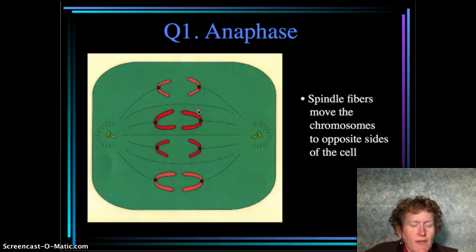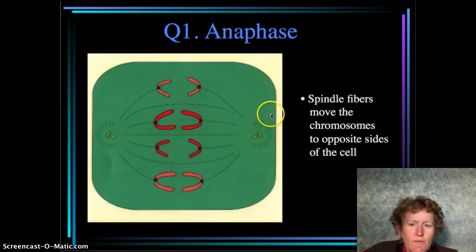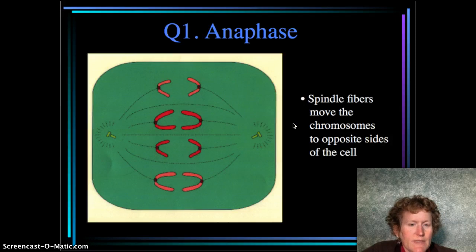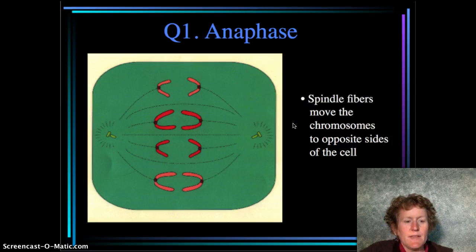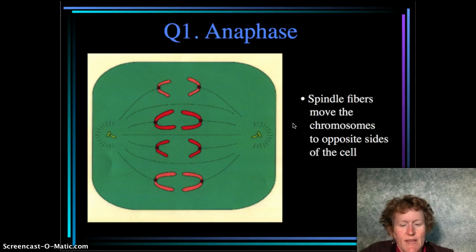In anaphase — still part of your table under question one — the spindle fibers move the chromosomes to opposite sides of the cell. That's the important thing that happens in anaphase. Make sure you put that in the table.